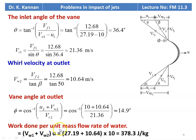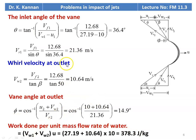Work done per unit mass flow rate of water = (Vw1 + Vw2) × U = (27.19 + 10.64) × 10 = 378.3 J/kg. These are all the answers to the problem.